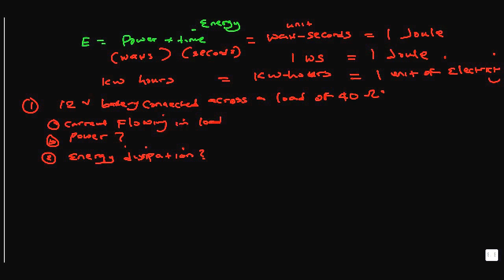For the current, we use Ohm's Law: I = V/R, which gives us 12 over 40 — that's 0.3 amps.